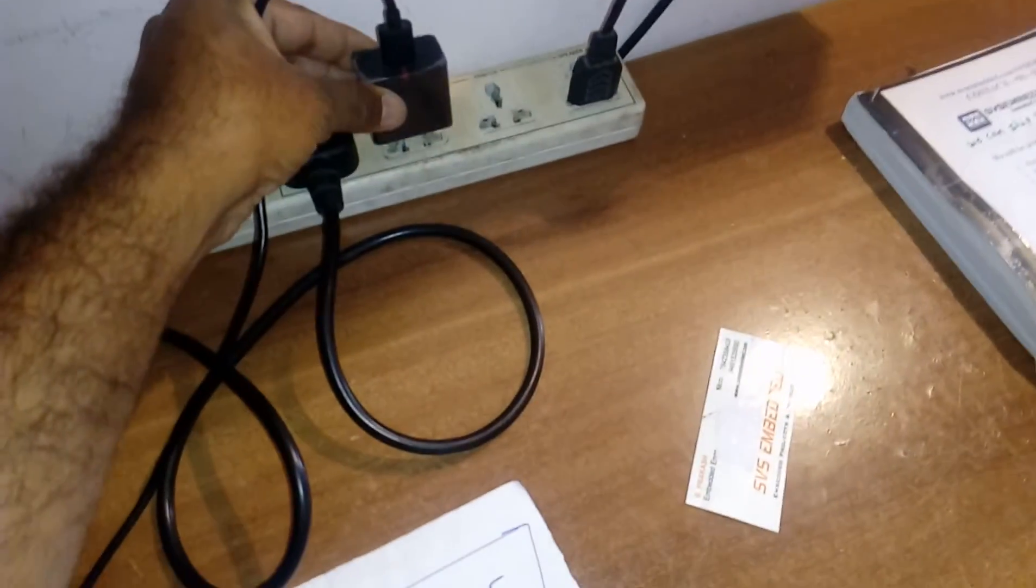Here we are using one Raspberry Pi module connected with the sensors. This is the heartbeat monitoring system. Now I am going to auto boot first. After two seconds, the program booting process will start.